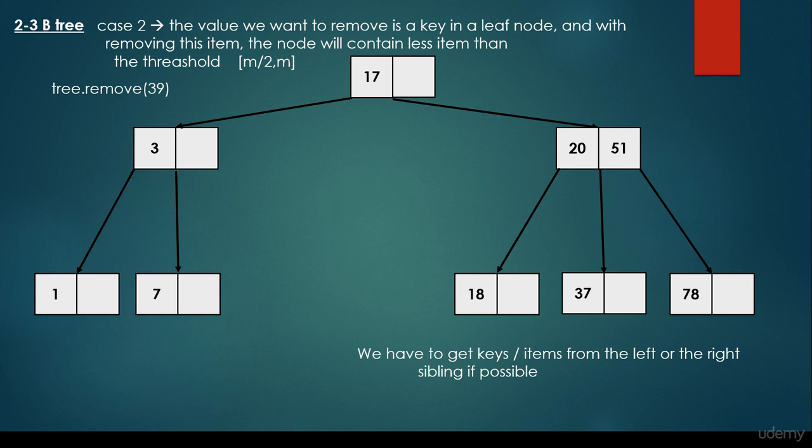What's the algorithm? If we conclude that removing an item would violate the B-tree property — meaning the node would end up with fewer items than m/2 — then we have to borrow items from the left or the right sibling.